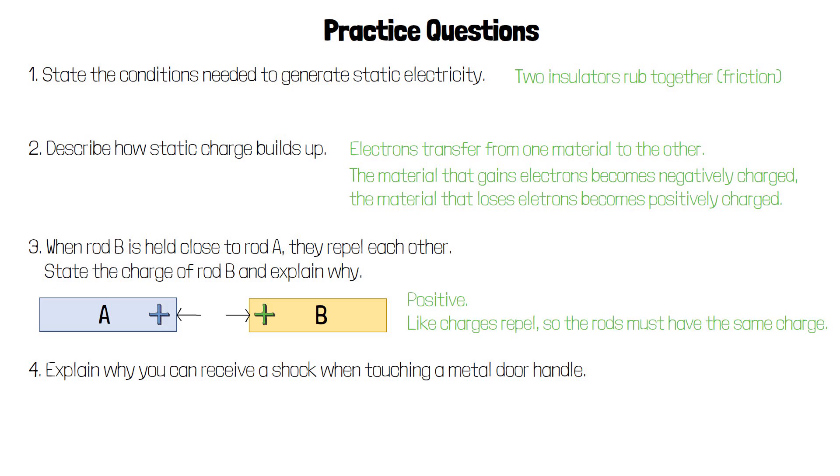If the two rods repel each other, that must mean they have the same charge. So if rod A is positive, then rod B must be positive too.